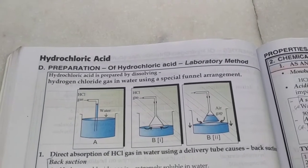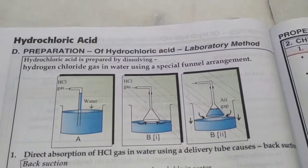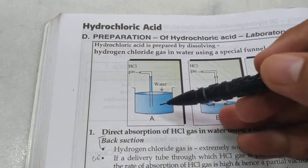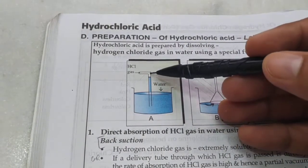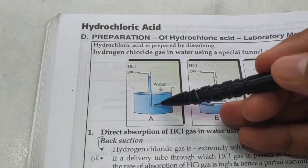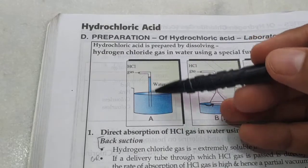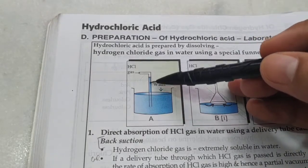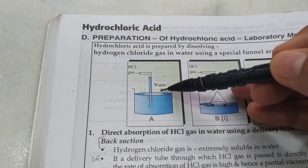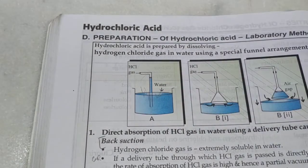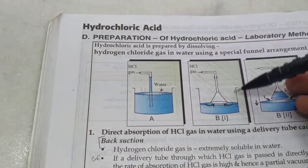To prepare hydrochloric acid from HCl gas, we dissolve HCl gas in water. However, since HCl is highly soluble in water, when you try to dissolve it using a normal tube, back suction takes place quickly — water rises up into the tube because HCl dissolves so rapidly that a vacuum is created. External air pressure then pushes the water into the tube, potentially damaging the apparatus. To reduce back suction, we use a special funnel arrangement.